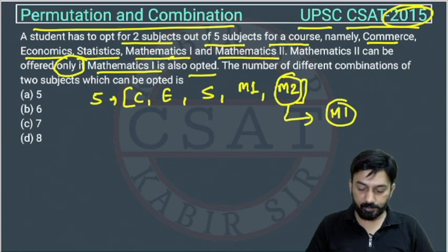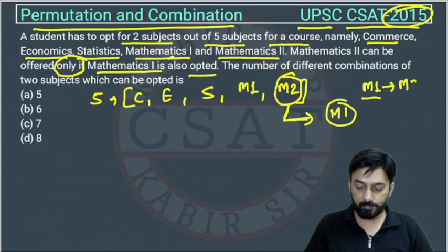So this is the only one case actually. If M1 is selected, then he can opt for M2 also. This is only one case.